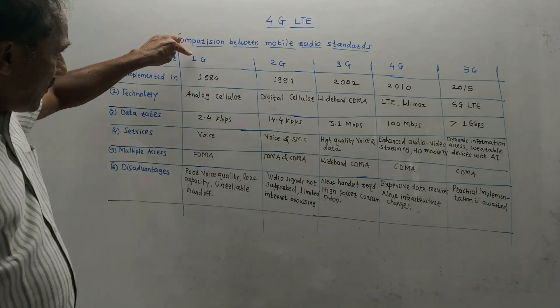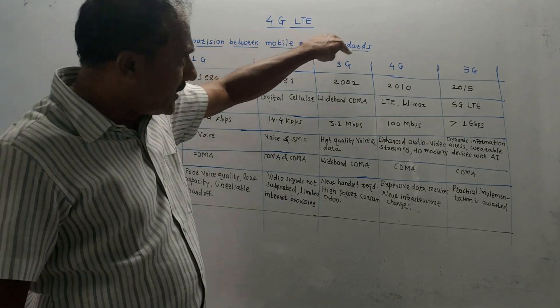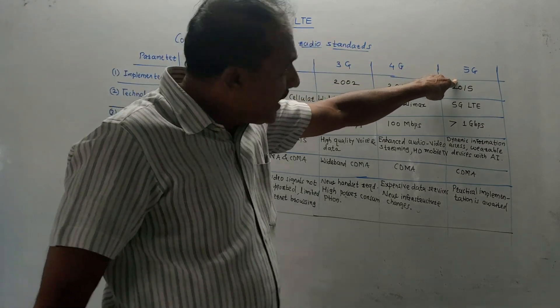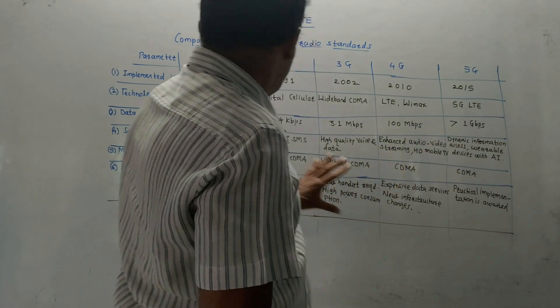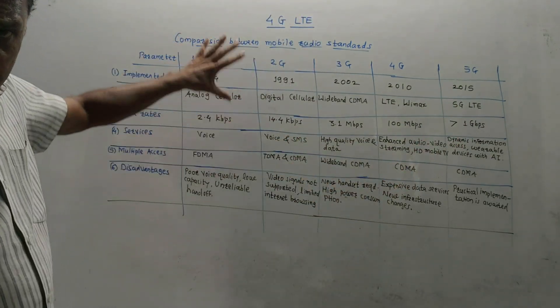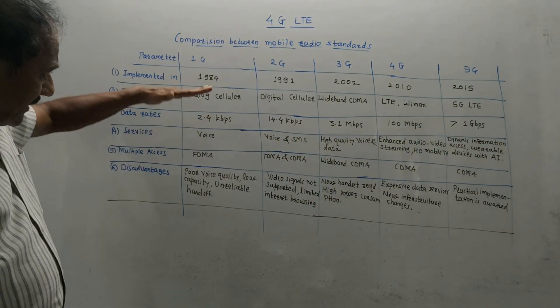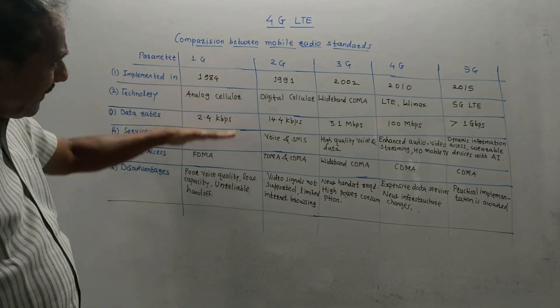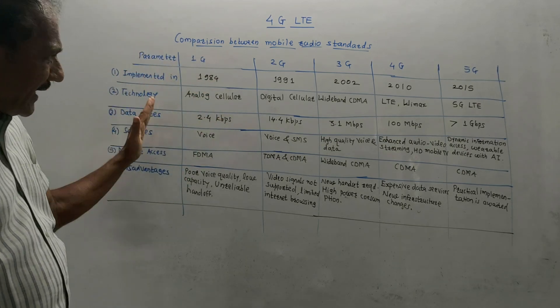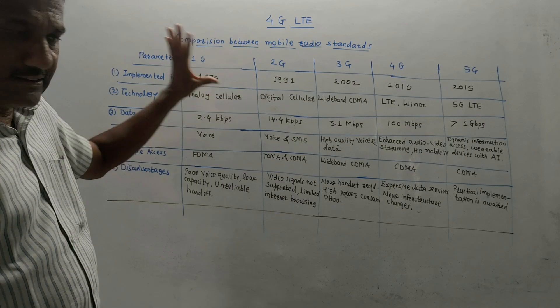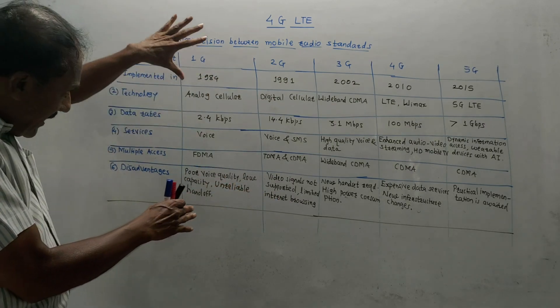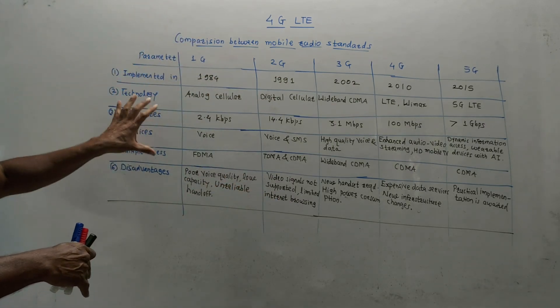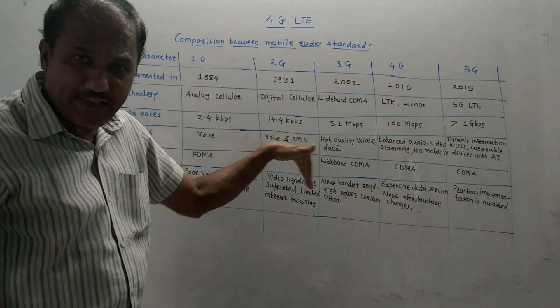There are different generations: first generation, second generation, third, fourth, and now we are in fifth generation. This table is the most important part. This table gives you a summary of comparison as far as different parameters and different generations are concerned.